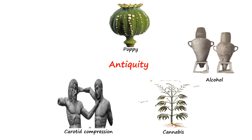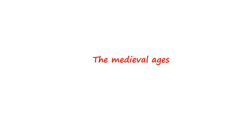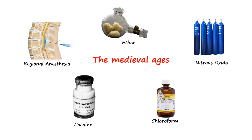Egyptians also used some brutal methods like carotid or jugular compression to produce a brief period of unconsciousness before circumcision. Acupuncture was a popular method of pain relief in China some 3000 years ago. The medieval age and renaissance saw development in chemistry and with it, the development of chemicals which had anesthetic properties. Drugs like ether, nitrous oxide, chloroform and cocaine were discovered. Regional anesthesia was also discovered in the 1800s.